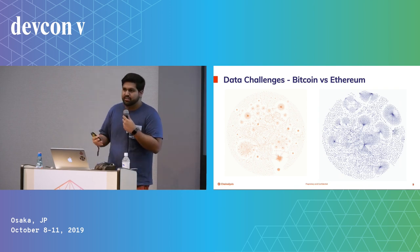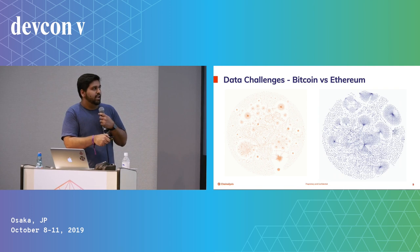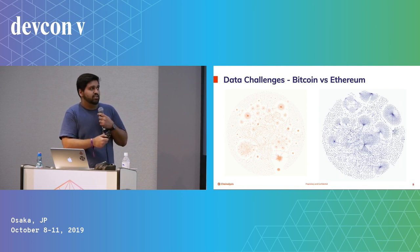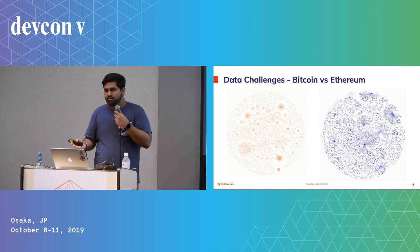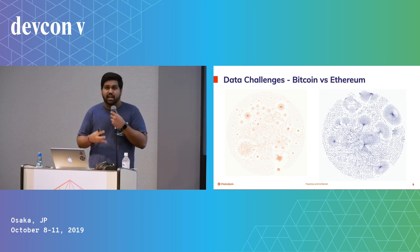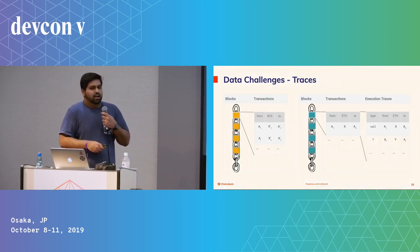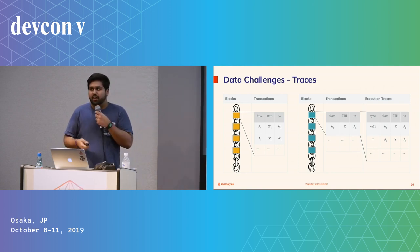Some of the data challenges we face — we were a very Bitcoin-centric company before, but now we've turned a lot to Ethereum. Bitcoin on the left and Ethereum on the right might look similar as graphs, but they're quite different in underlying structure. On the left it captures the UTXO structure, and on the right is the account-based structure. Additionally, smart contracting provides a new layer of analysis — we have to go beyond transactions and into execution traces themselves to see what sort of execution happens.